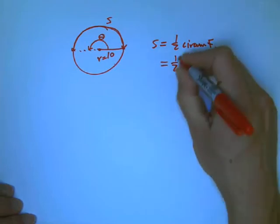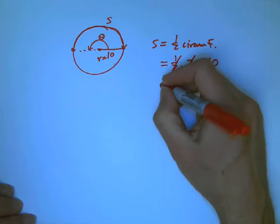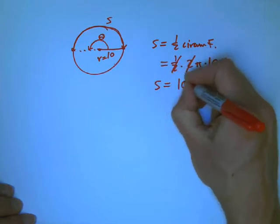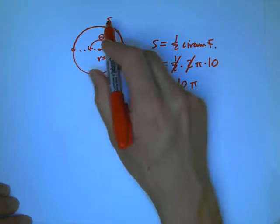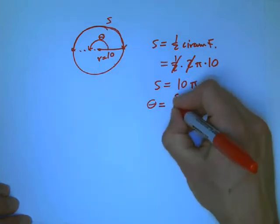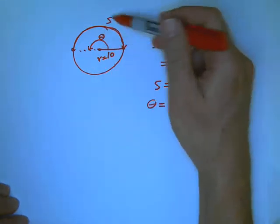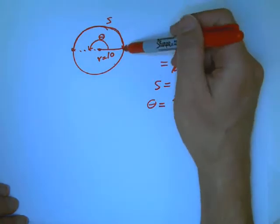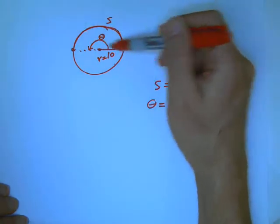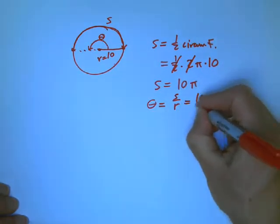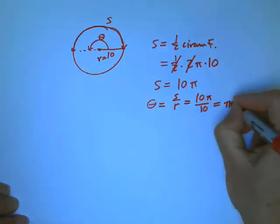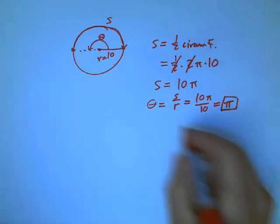So 1 half times 2π times 10, those are going to cancel. So s is 10π, and then theta is what we do is we take s and we divide by r. We want to figure out how much crust do we have, given that it's a radius 10 pizza. And we get π.